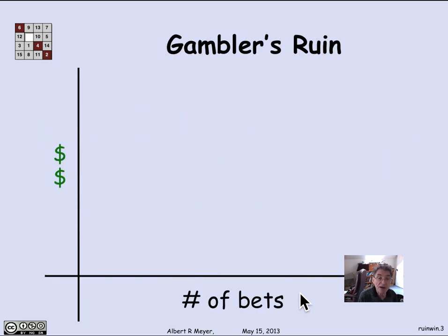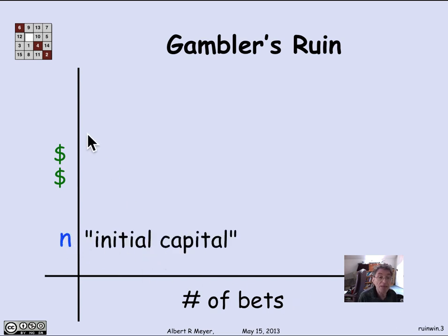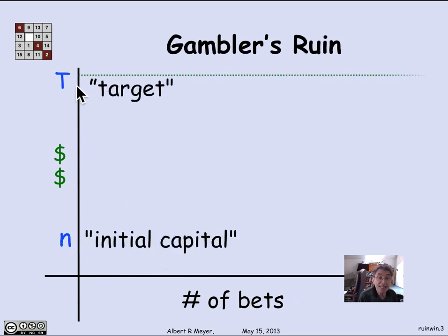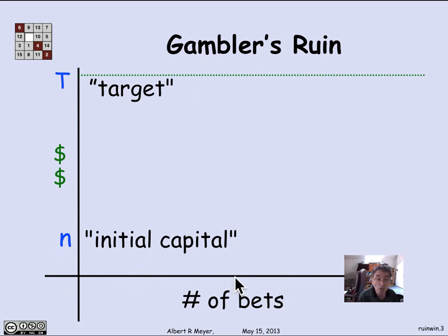If we graphed it, N is your initial capital and T is your target. Dollars is on the vertical axis, so you're starting with N and trying to get up to T. If you ever hit the x-axis, that's when you've run out of money, and the game ends there.